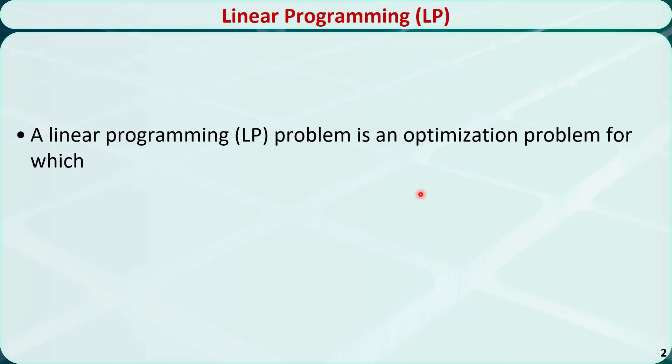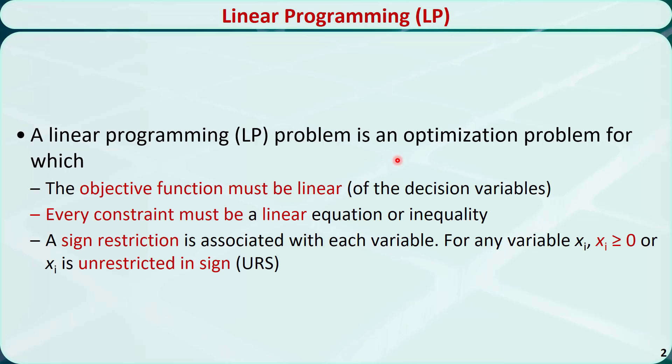Here is the definition of linear programming. A linear programming or LP problem is an optimization problem for which the objective function must be a linear function of the decision variables.